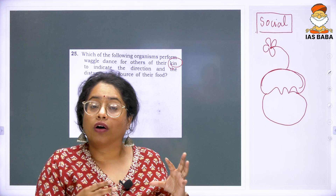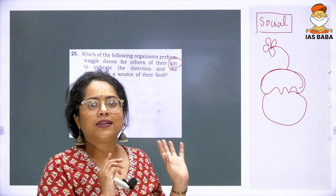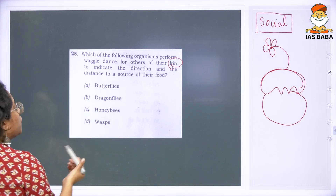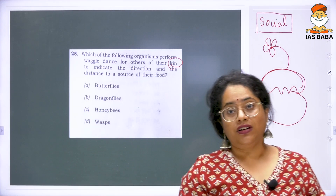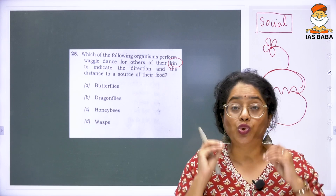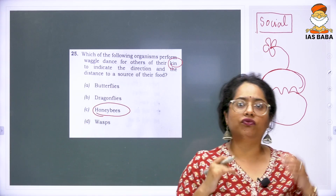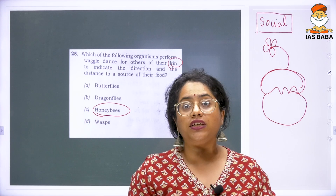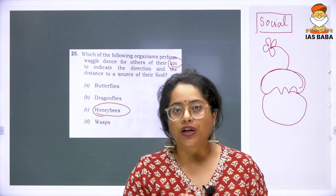Once the waggle dance is performed, the other members of the group understand that there is food at a specific place. Looking at the four organisms given — butterfly, dragonflies, honeybees, and wasps — the one category that is extremely social in nature is your honeybees, whether in terms of the beehives they create or the kind of social communication they have.